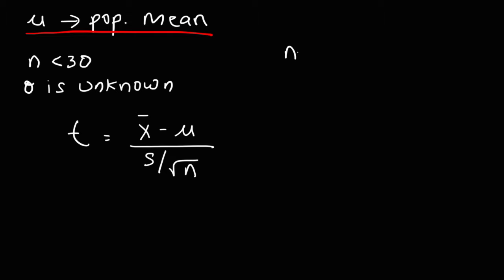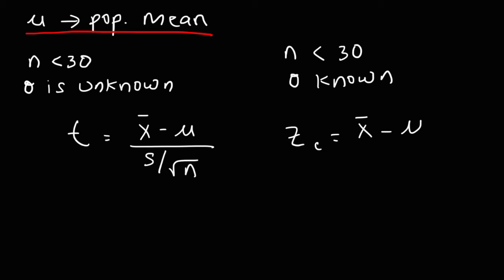Now, let's say that N is less than 30 but we know the population standard deviation. In this case, we could use a normal distribution. So we're going to calculate the Z value. The calculated Z value is going to be the sample mean minus the population mean, divided by the population standard deviation over the square root of N.